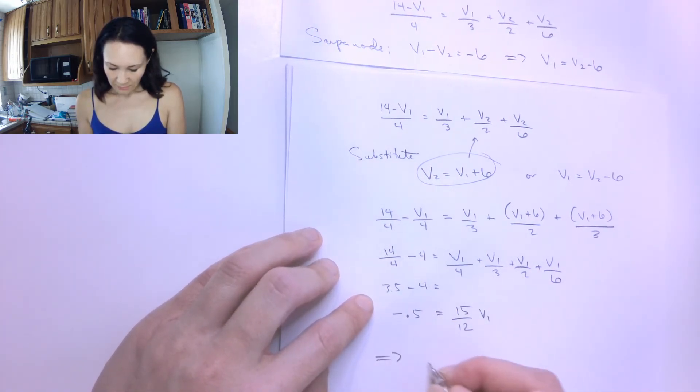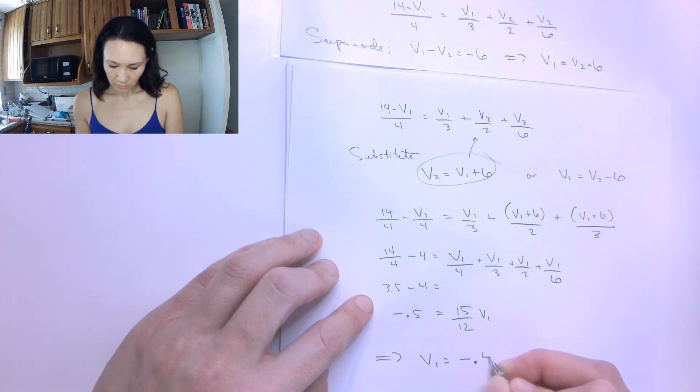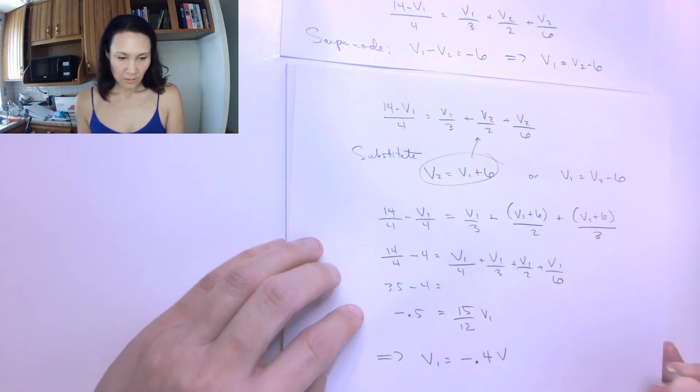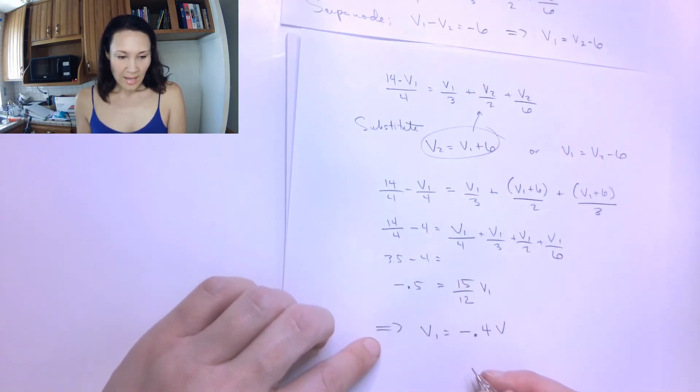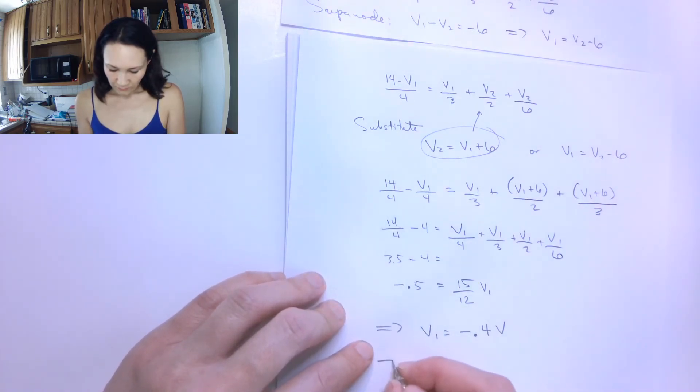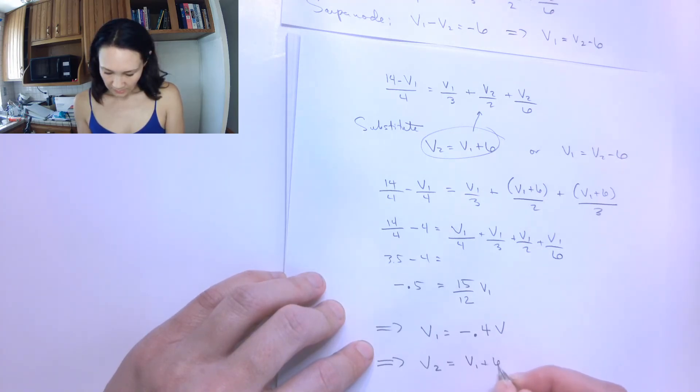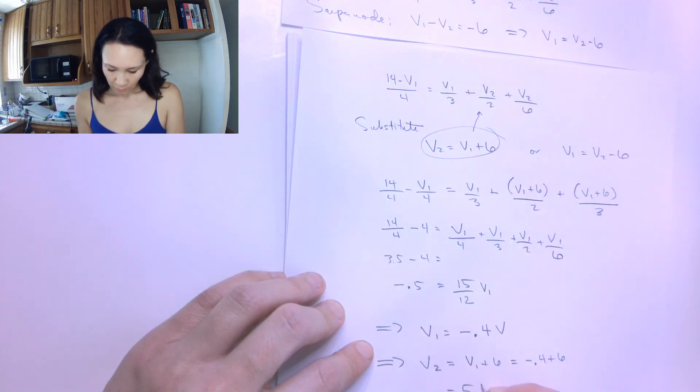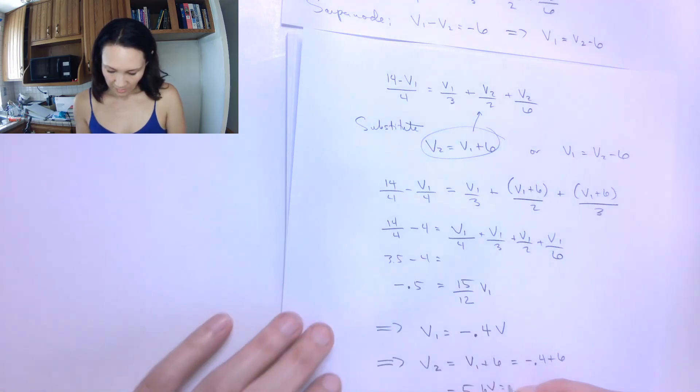So this implies that V1 is equal to negative 0.4 volts. So great, now that I have V1, this means that V2 is given by V1 plus 6, or negative 0.4 plus 6, which is 5.6 volts is my V2.